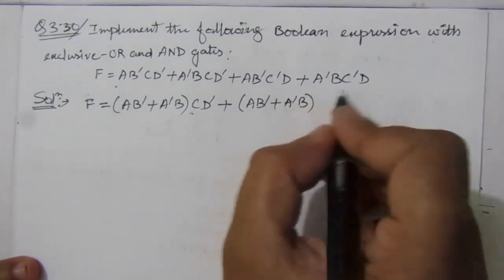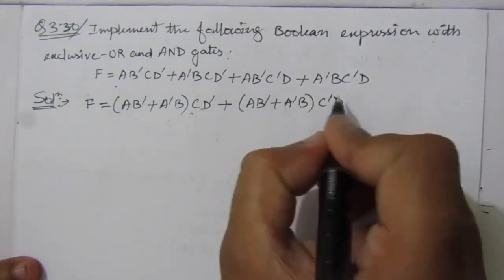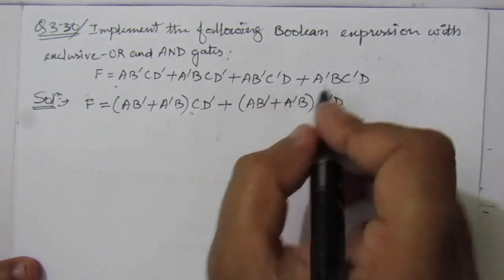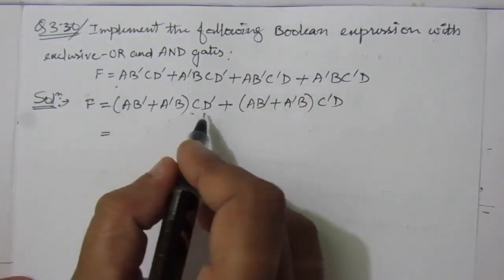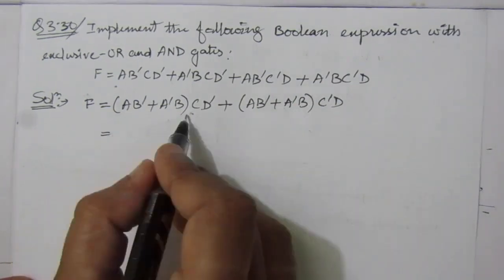So we will have here C bar D. C bar D is taken common from these two terms. So we got AB bar plus A bar B. From these two terms, we can take this term common.